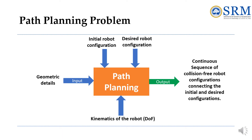The path planning problem can be stated as: compute a collision-free path for a rigid or articulated moving object among obstacles. The input includes the geometry of the moving object (a robot or molecule) and the obstacles, the kinematics of the robot (degrees of freedom, position, and orientations), and the initial and goal robot configurations. The output is a continuous sequence of collision-free robot configurations that connects the initial and goal configuration.